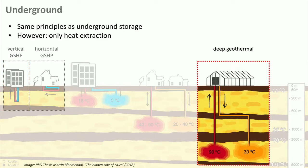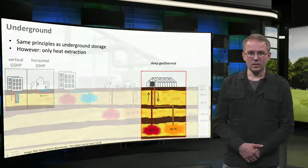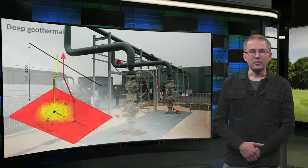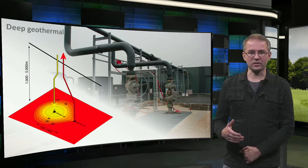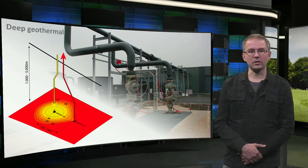Finally, there are deep geothermal systems. The deeper you go, the hotter it gets — the average temperature increases by about 3 degrees Celsius for every 100 meters of depth. To get high temperatures, the well will therefore have to be very deep: 500 meters to 2 kilometers is common, and for industrial sources, 5 to 7 kilometers is being explored. The presence of an aquifer at depth makes it a lot easier to extract this heat, as shown here. Because of the need for deep drilling, deep geothermal systems are generally very expensive and therefore only suitable for very large buildings, neighborhoods, and districts. This example is used for a horticulture complex in the Netherlands.